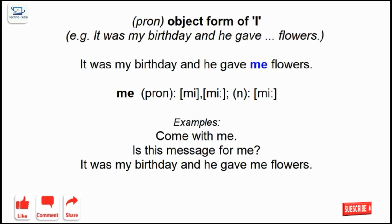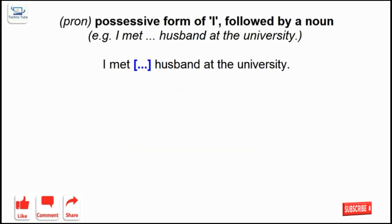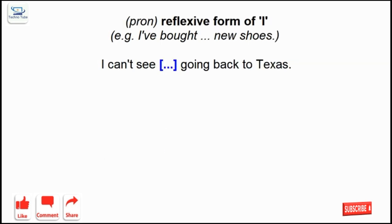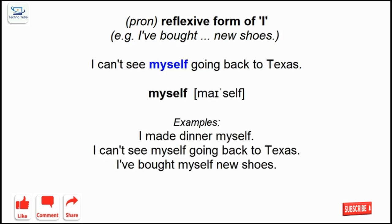Me: object form of I. My: possessive form of I, followed by a noun. Myself: reflexive form of I.